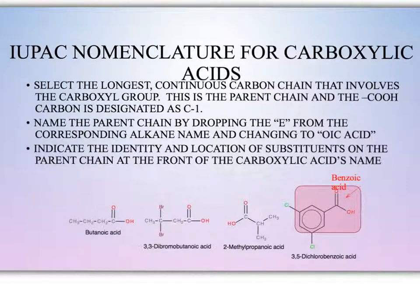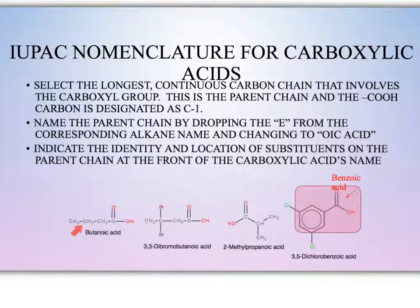The nomenclature rules for naming carboxylic acids are very similar to rules for naming other functional groups in organic chemistry. First, select the longest continuous chain that includes the carboxyl group — that carboxyl carbon will be carbon one. Name the parent chain using prefixes for the number of carbons, with -ane, -ene, or -yne endings depending on whether there are single, double, or triple bonds. Drop the final -e, add -oic followed by the word acid, then add any substituents for side chains.